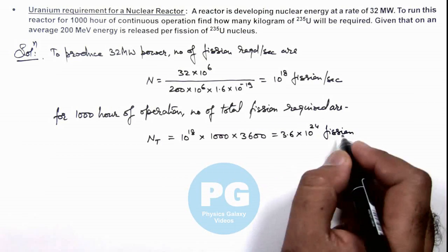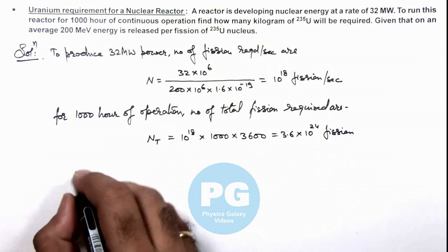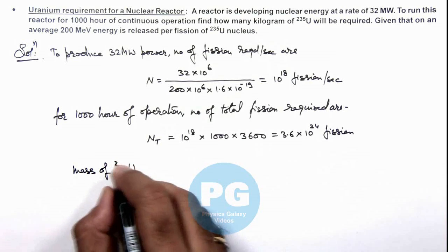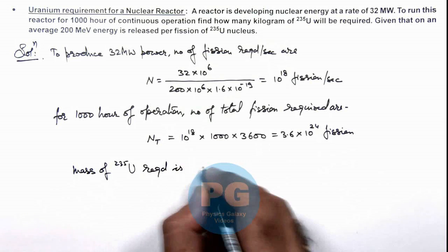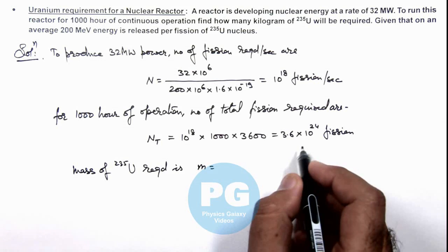So 1 fission requires 1 uranium atom, so we can calculate the mass of uranium-235 required. We can convert this number of uranium atoms to mass, this will be...